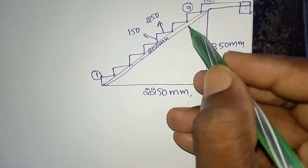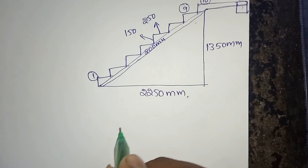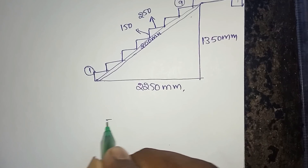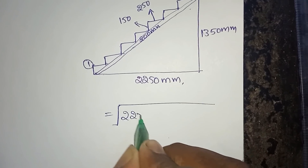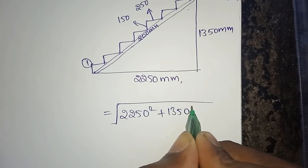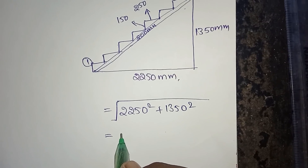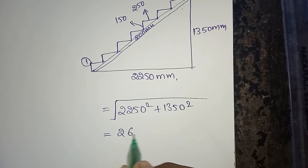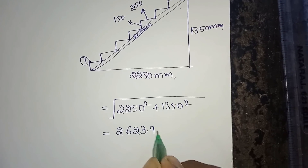Finding this length — the hypotenuse. The square root of 2250 squared plus 1350 squared gives a value of 2623.9 mm.